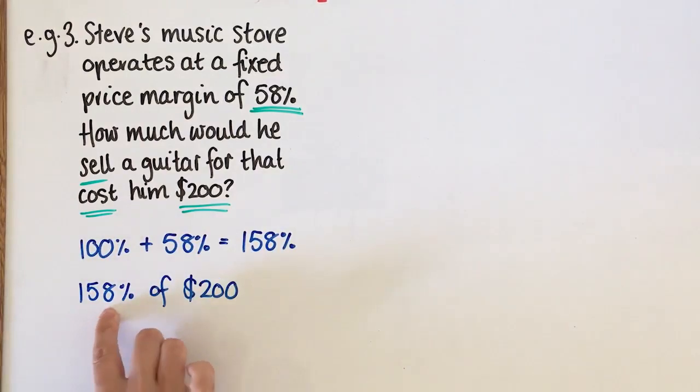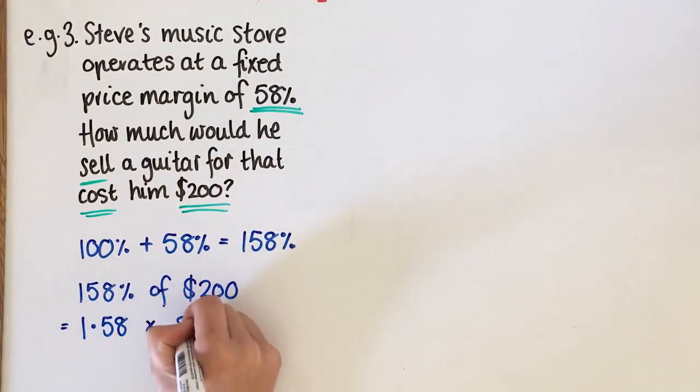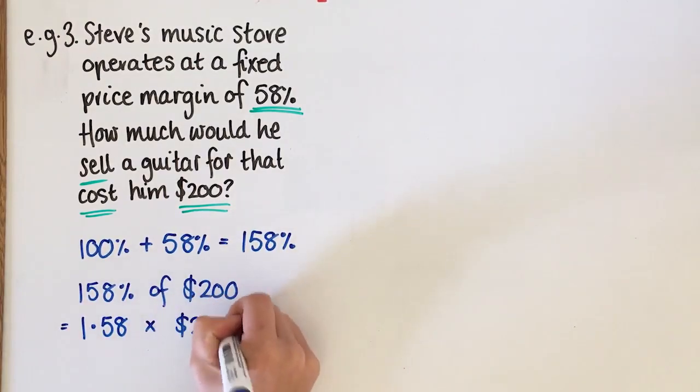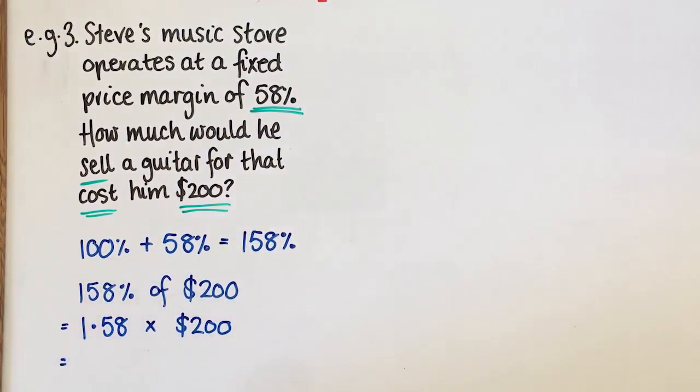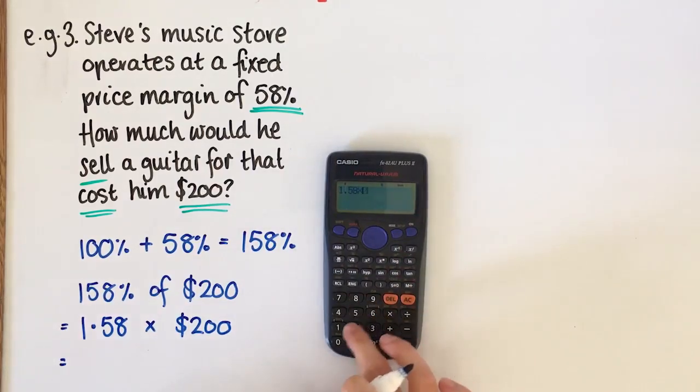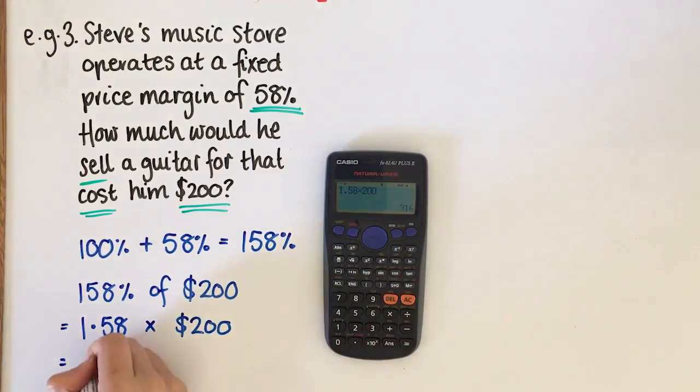The reason this is bigger than 100% is because this is going to be more than $200 at the end, otherwise Steve's not making any money. So we change this to a decimal. If you don't know how to do that, watch our previous videos. So 1.58 times $200. I can do that on the calculator. 1.58 times $200 is going to be $316.